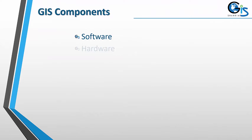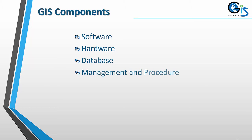Now let's see the GIS components. These are the components of GIS: software, hardware, database, database management, procedure, people, and network.